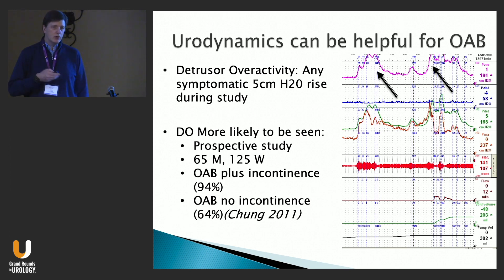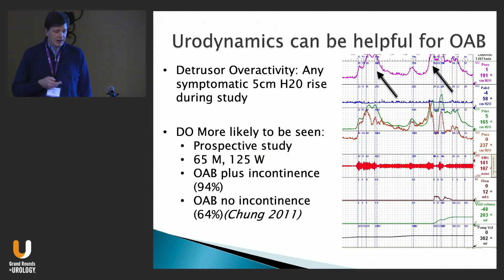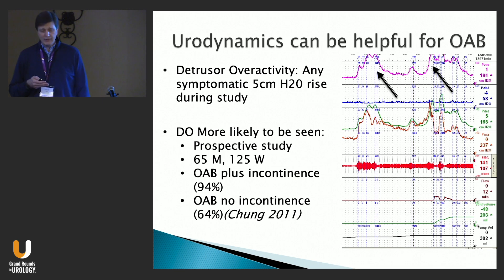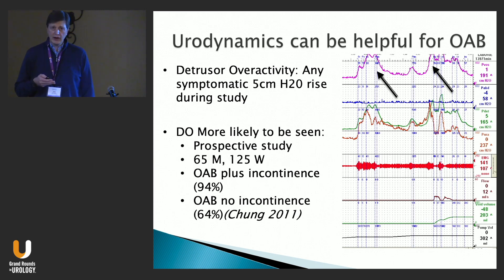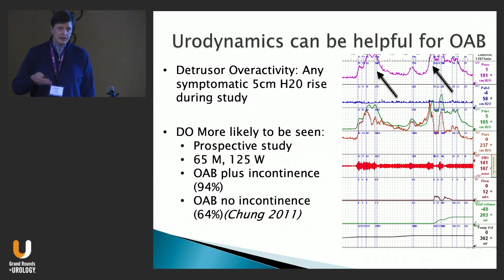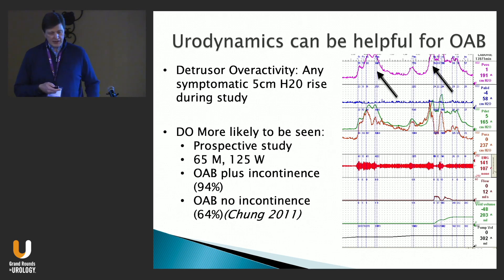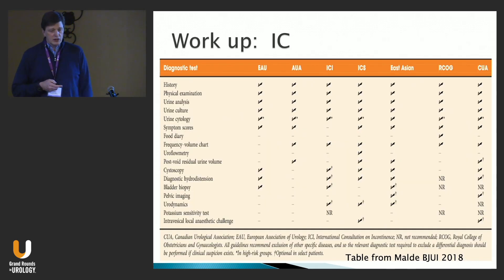If detrusor overactivity — a symptomatic rise of 5 cm or more — is seen on urodynamics, it is pathognomonic of overactive bladder. However, absence doesn't rule it out. A study by Chung 2011 showed that about 36 percent of patients with a clinically strong OAB diagnosis showed no detrusor overactivity on urodynamics. So you don't need urodynamics, and shouldn't use it as a screening tool. The heavy sympathetic drive during urodynamics may actually overwhelm and cause the bladder to relax.